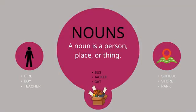Nouns. A noun is a person, place, or thing. Examples include: girl, bus, jacket, cat, and school.